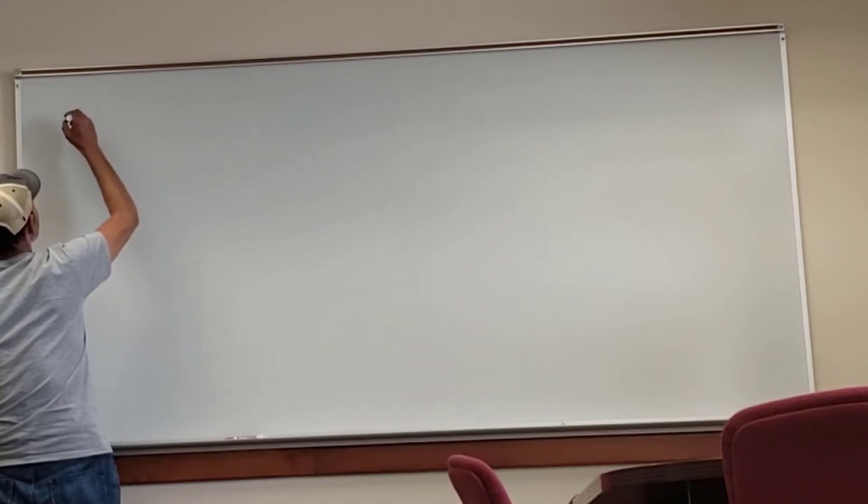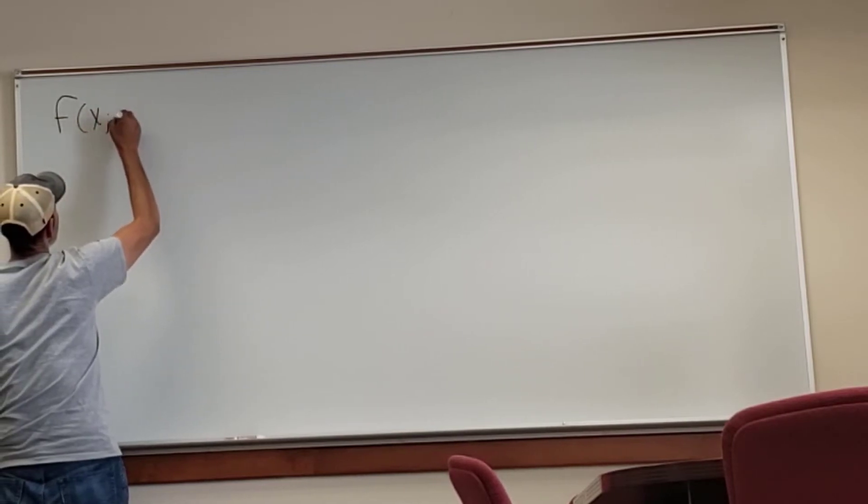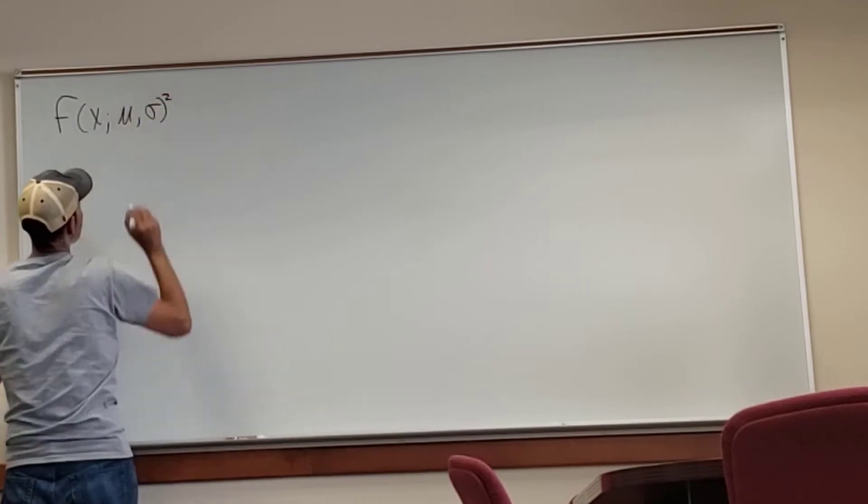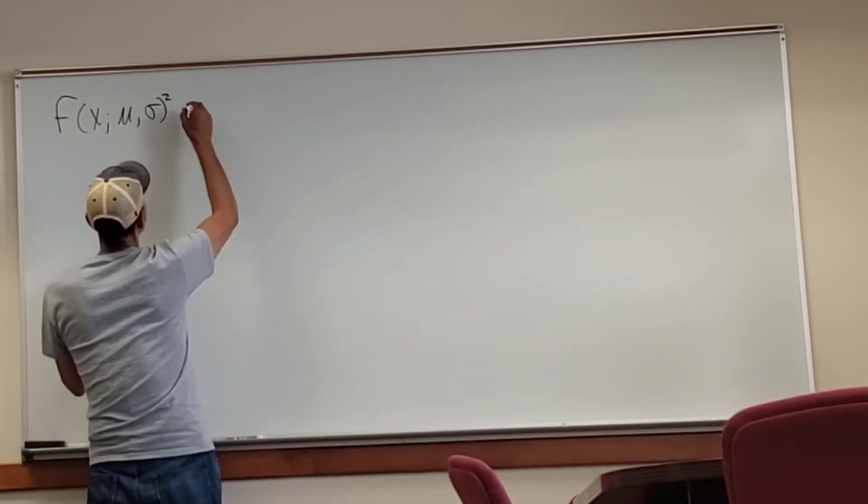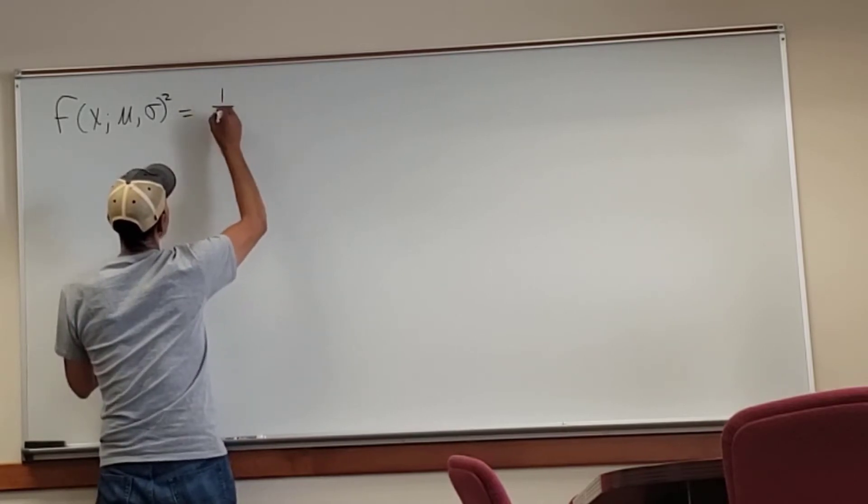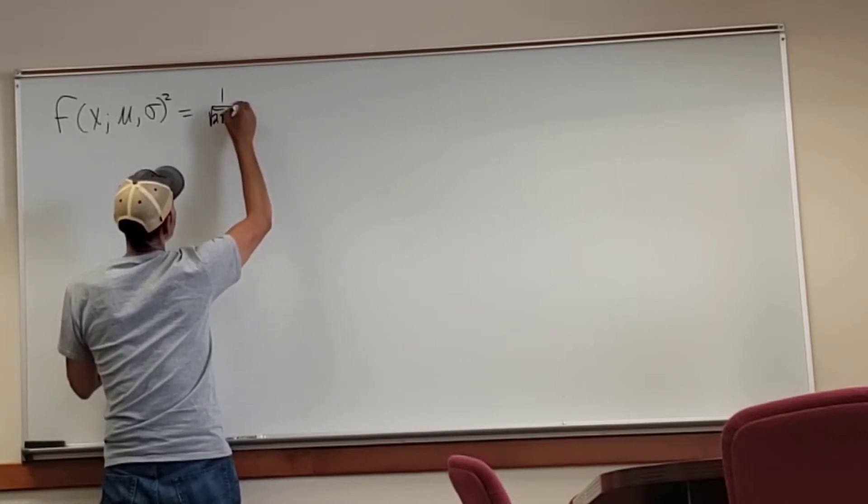What I'm doing here is proving the maximum likelihood estimates for the mean mu and the variance sigma squared, considering a normal distribution. I'm laughing because the sigma, I put the square outside of the parentheses. It should be inside the parentheses, but it's okay.